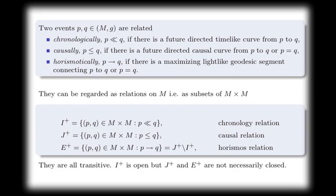We can regard these relationships exactly as relations and subsets of the space-time times itself. And this gives you these sets here. Of course, the horismonus relation is the difference between the two.